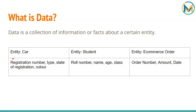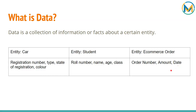Certain information or facts about an entity is called data. Here are three examples: the entity car has associated data like registration number, type of car, state of registration, and color. The entity student could have information like roll number, name, age, and class. An e-commerce order could have order number, amount, date, and customer ID.